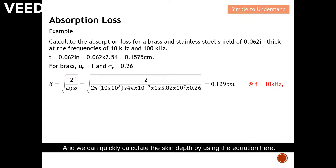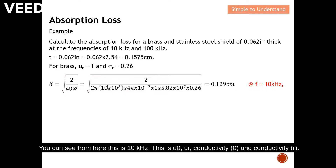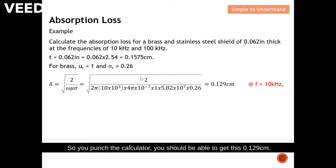We calculate the skin depth using the equation where ω = 2πf. At 10 kHz, plugging in μ₀, μᵣ, σ₀, and σᵣ for brass into the calculator, we obtain a skin depth of 0.129 centimeters.